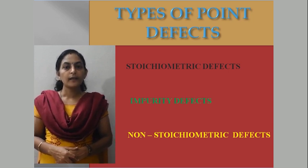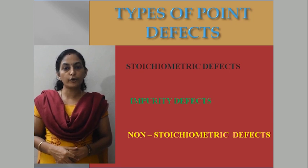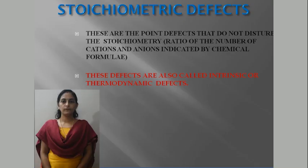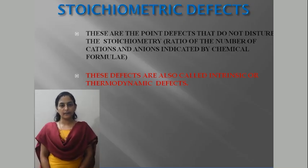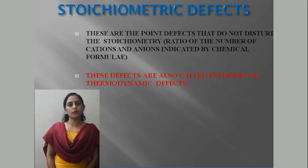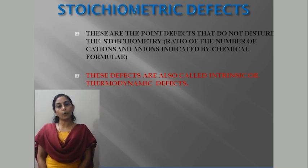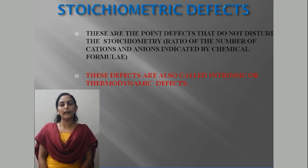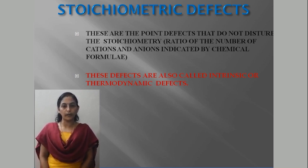Point defects can be classified into three types: Stoichiometric defects, impurity defects, and non-stoichiometric defects. We will discuss stoichiometric defects in this class. Stoichiometry refers to the fixed ratio of elements in a compound's chemical formula.